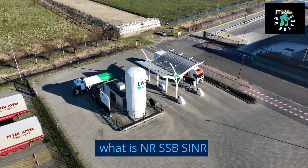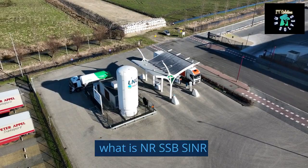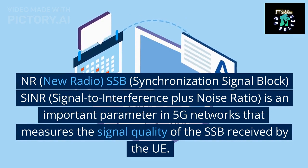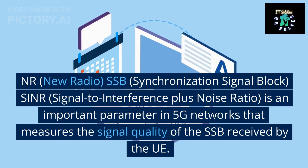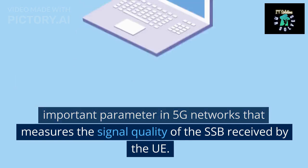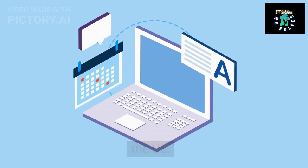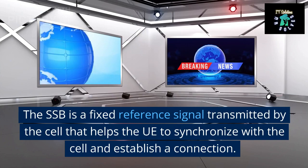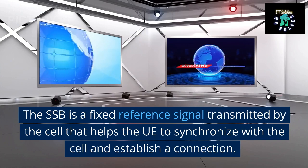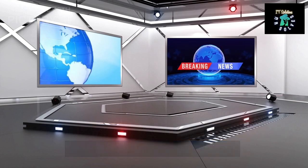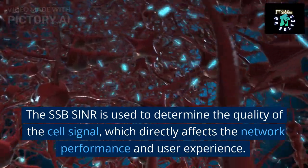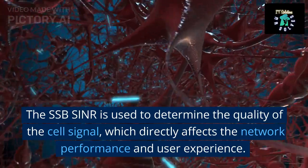What is NR SSB-SINR? NR, new radio, SSB, synchronization signal block, SINR, signal-to-interference plus noise ratio, is an important parameter in 5G networks that measures the signal quality of the SSB received by the UE. The SSB is a fixed reference signal transmitted by the cell that helps the UE to synchronize with the cell and establish a connection. The SSB-SINR is used to determine the quality of the cell signal, which directly affects the network performance and user experience.